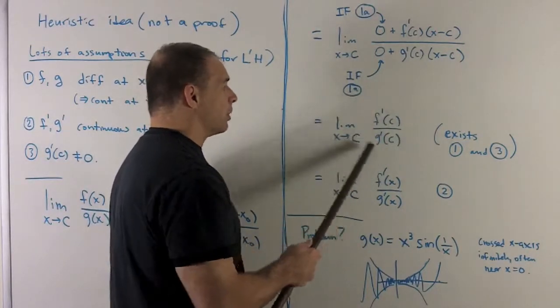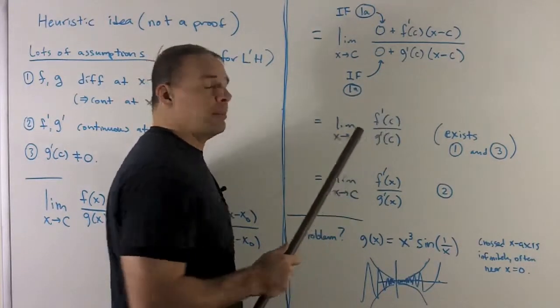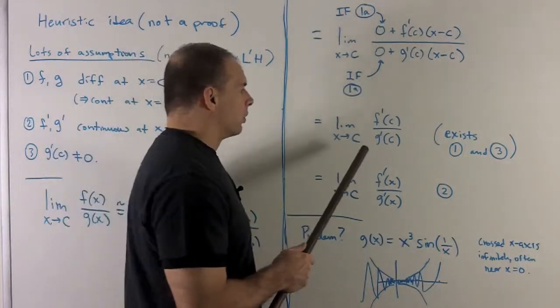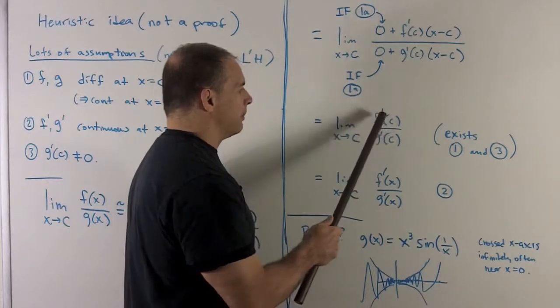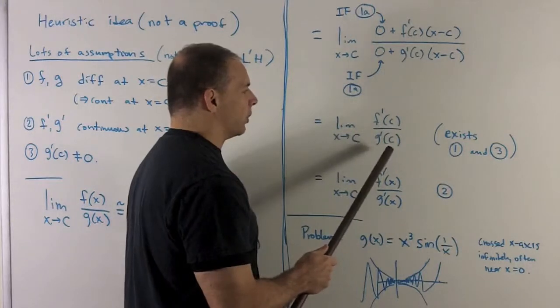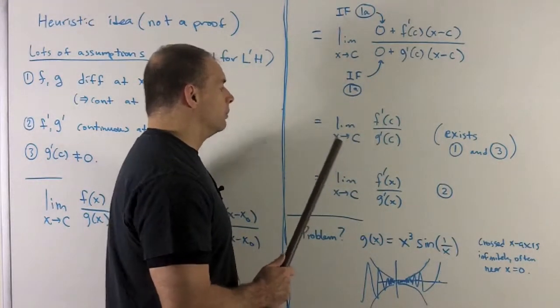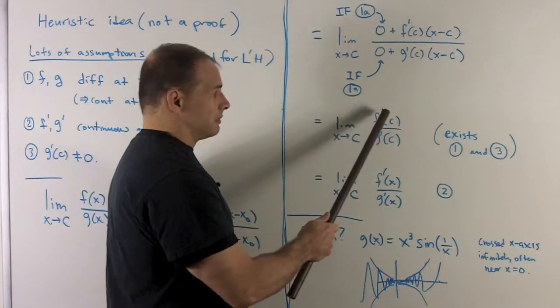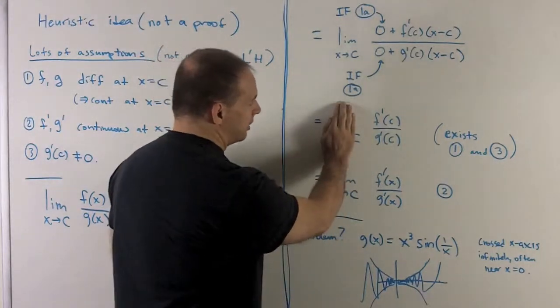Leaving me with f prime of c over g prime of c. Now, these are just numbers. We don't know what they are because I don't have actual functions in here, but when you evaluate them, they'll be the slopes of the tangent lines. Why do these exist? Well, one is we're differentiable, so that means f prime and g prime exist at c. And then by three, I'm not going to be dividing by zero here, so this is just going to be some number. Note, I can throw away the limit here because this is just a number. There's no x term in here, so it's really like that isn't there at all.